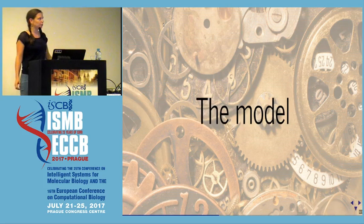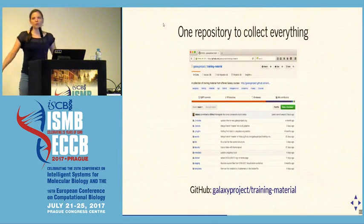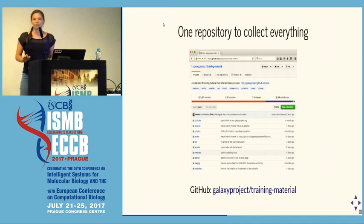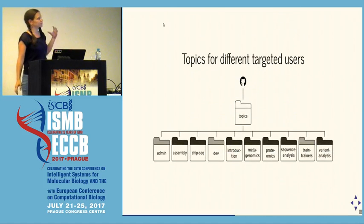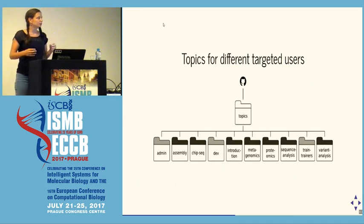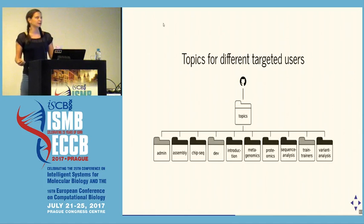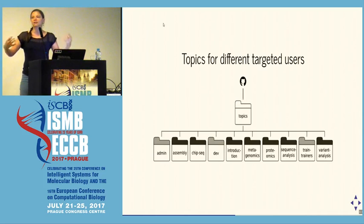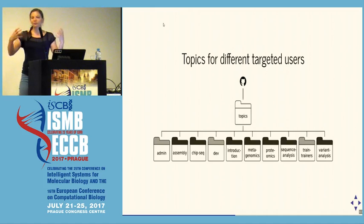During the last year, we worked a lot with the Galaxy Training Network to develop such a model. The first step was to create a Galaxy GitHub repository to collect everything — content, technical infrastructure, everything. We defined topics and targets: the main targets were trainings on using Galaxy for data analysis — assembly, ChIP-seq, metagenomics, and many other topics — but we also developed training for Galaxy developers and administrators.